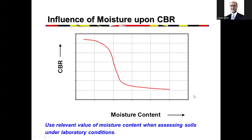Another important factor is moisture content. The higher the moisture content, the lower the CBR — and this is not a linear relationship. For example, at 4% moisture CBR may be 10, at 5% moisture it may drop to 8, but at 6% moisture it could fall sharply to around 2.5. Moisture has a large non-linear impact on CBR, which is why we use the soaked CBR test for design.